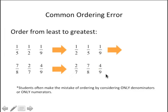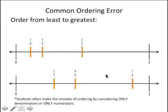To find the correct order, you have to think about the fraction as a whole — the relation between the numerator and the denominator. The correct order for the first set is: one-ninth is the smallest, followed by one-fifth, and one-half is the greatest. And for the second set: two-sevenths, four-ninths, and seven-eighths. When we look at these sets of fractions on the number line, we can see their relative magnitude easily.